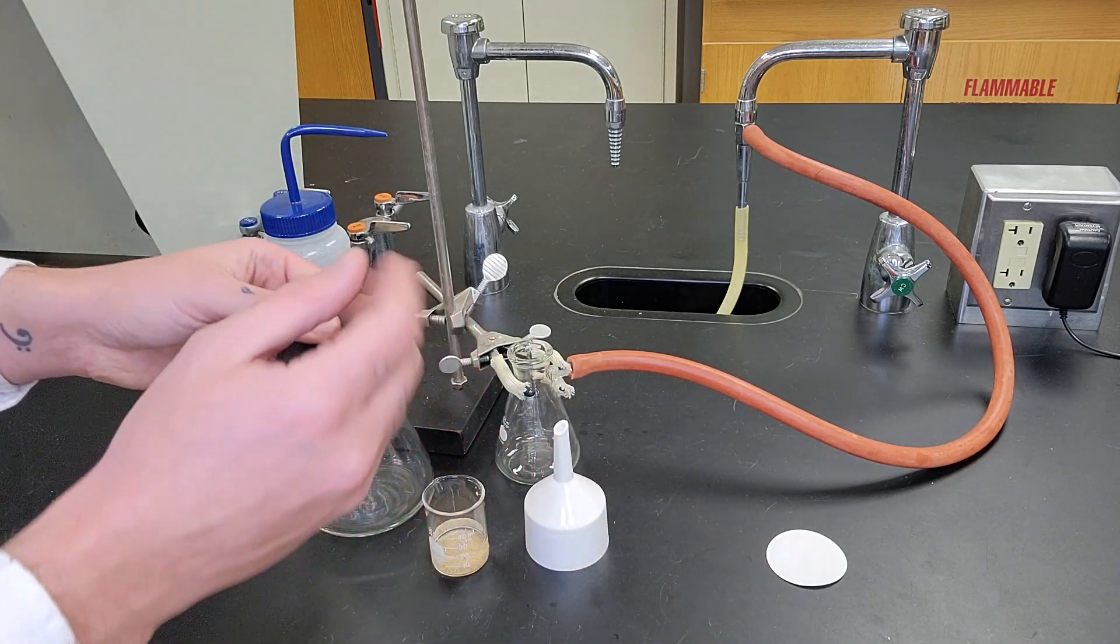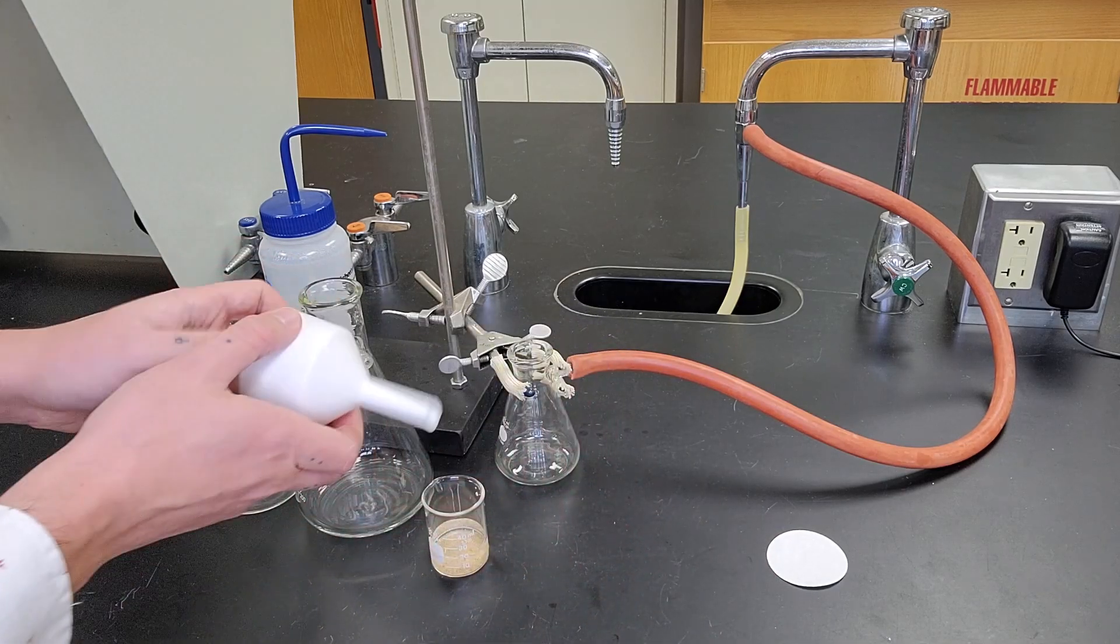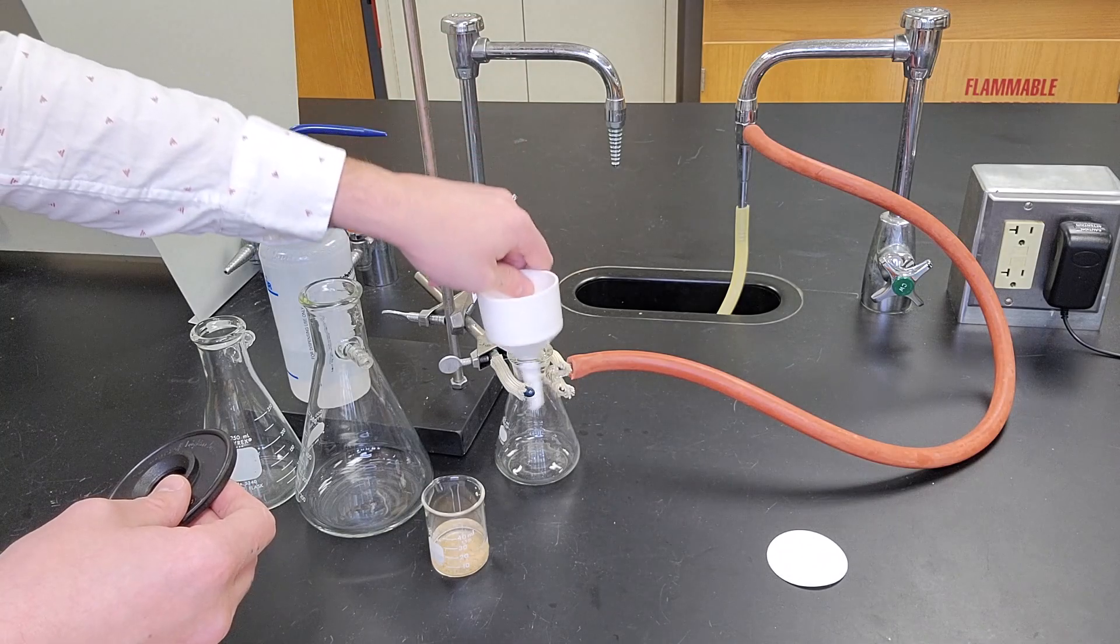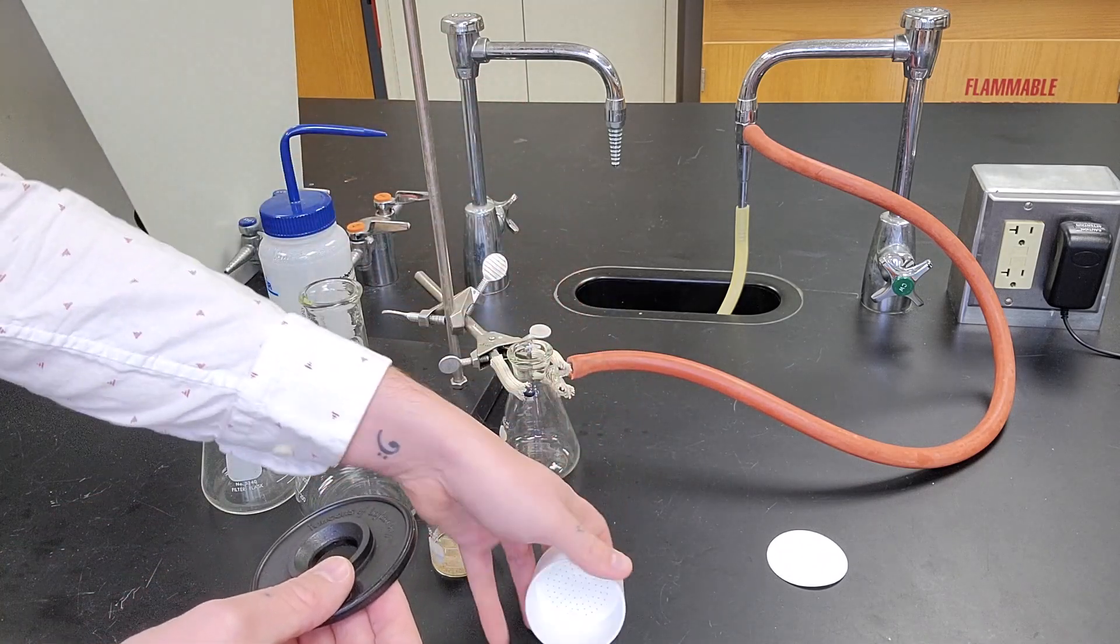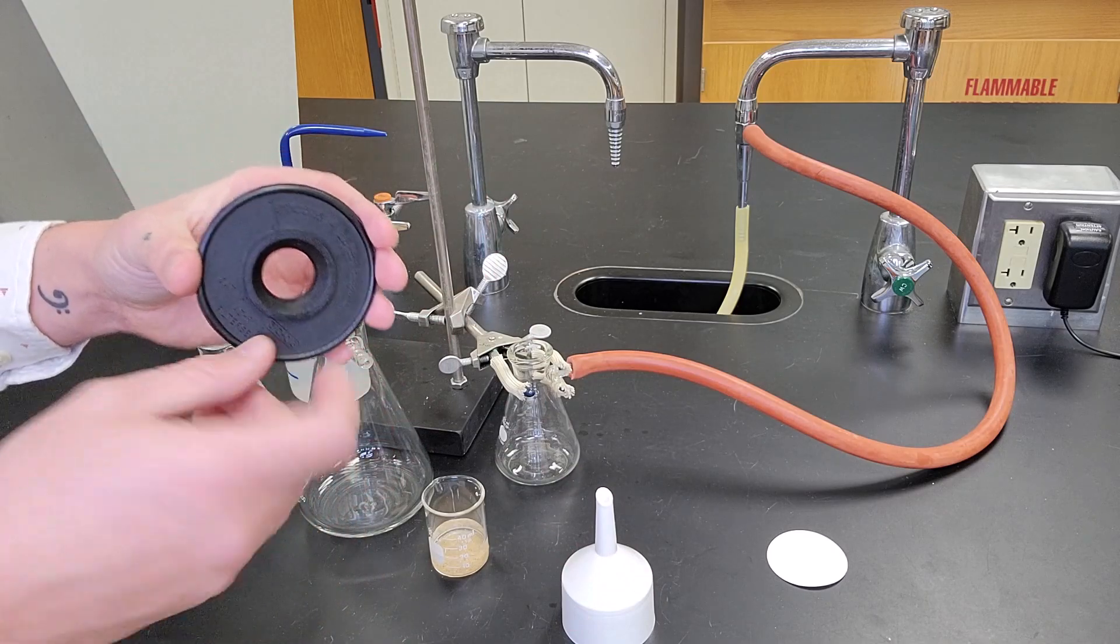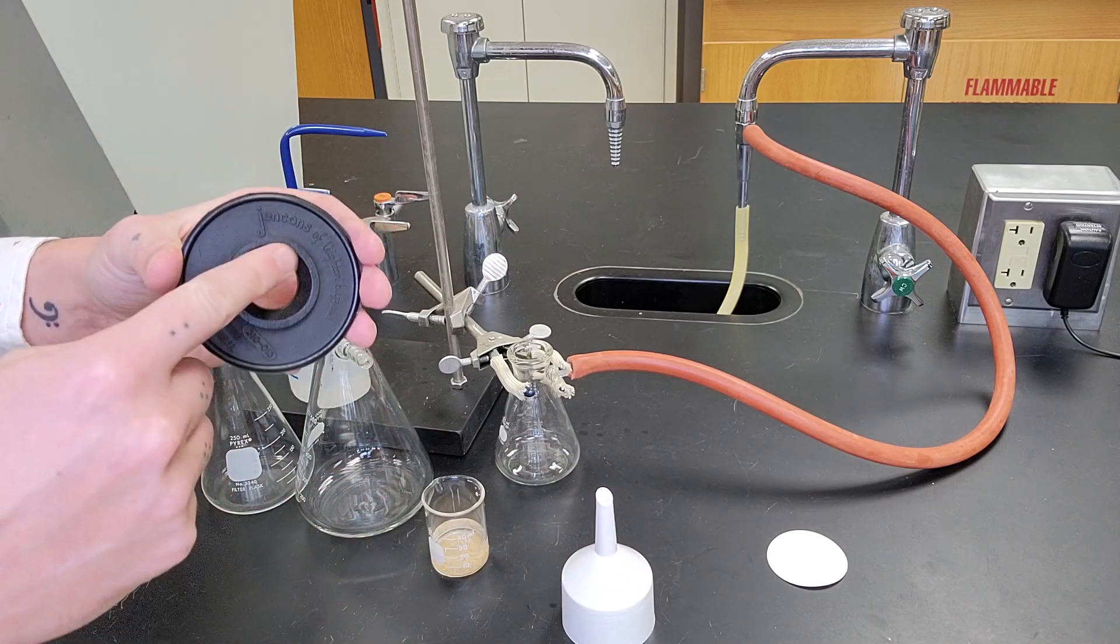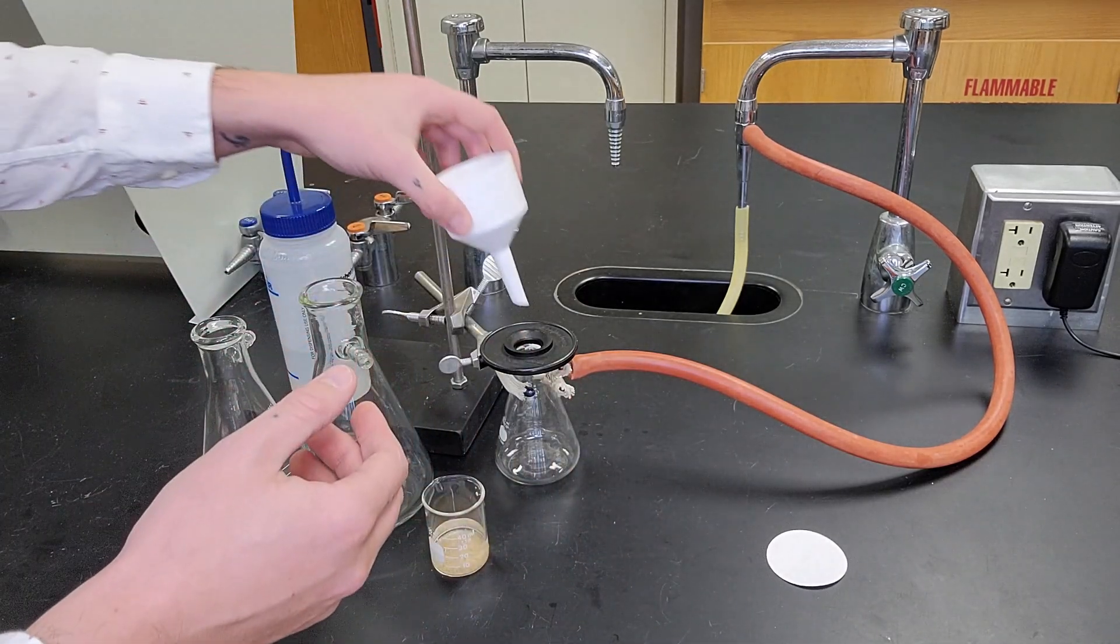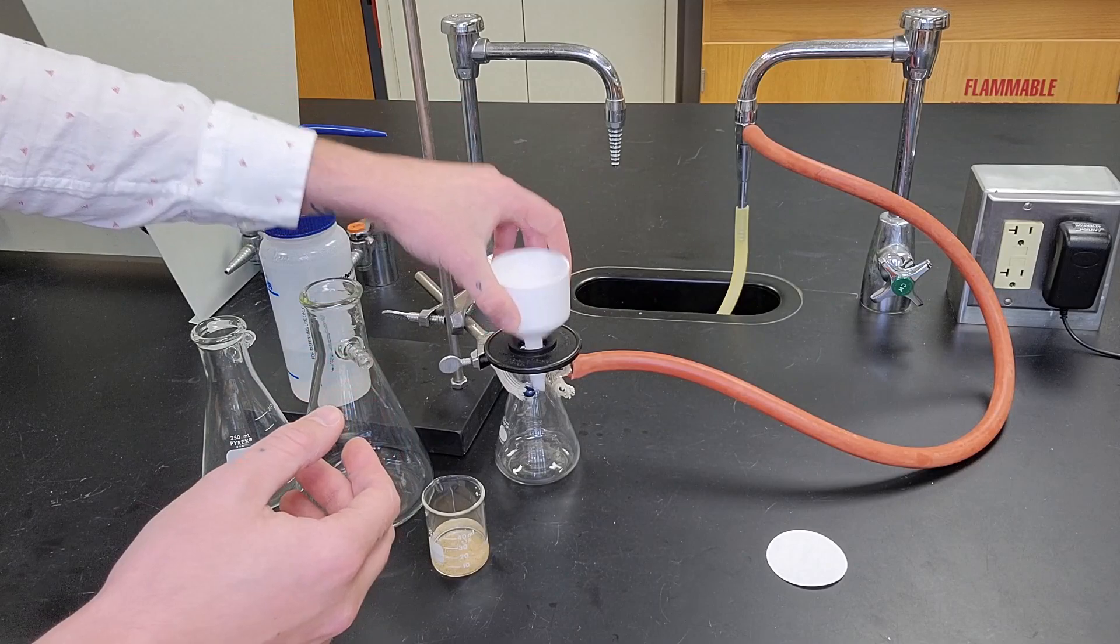Now between the Buchner funnel and the sidearm flask, this doesn't just sit on it like that. We have to actually create a seal since plastic on glass does not create a seal. So we have a rubber ring that is a little bit fluted and will sit in between the Buchner funnel and the sidearm flask.